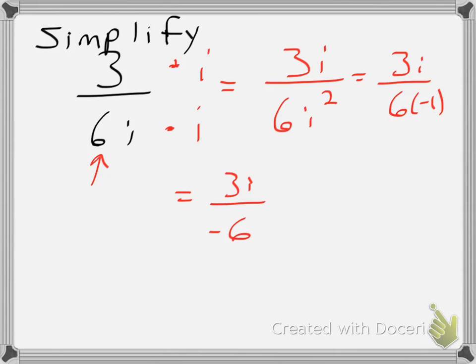Now I want to continue to simplify, so I can reduce 3 and 6 each by 3. And I'll get 1i, or just i, over negative 2. My i now removed from the denominator. This will be my final answer.